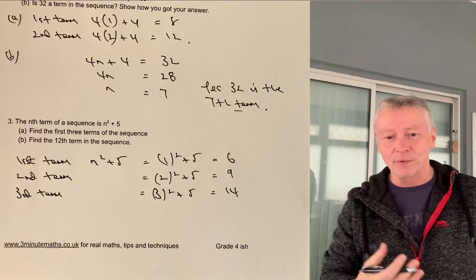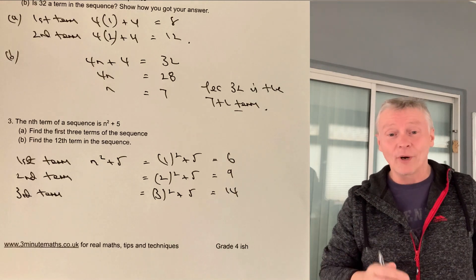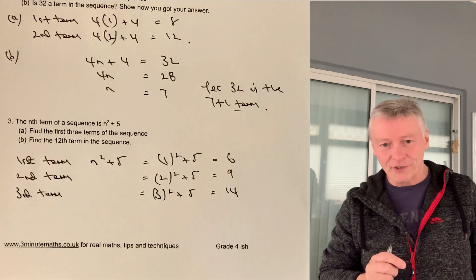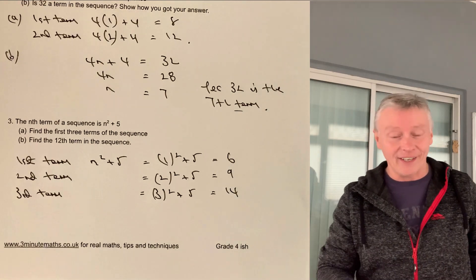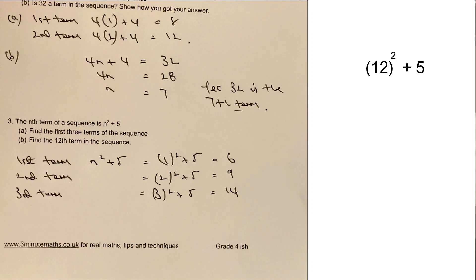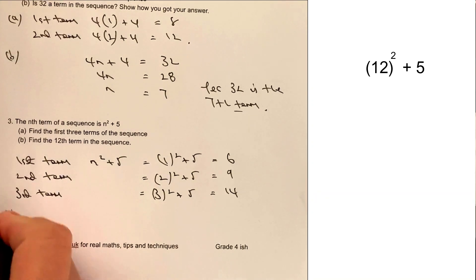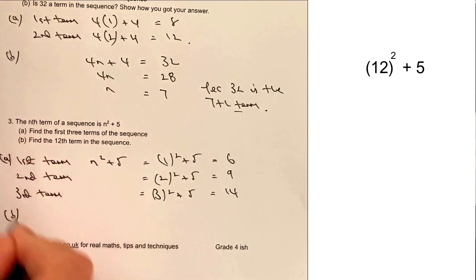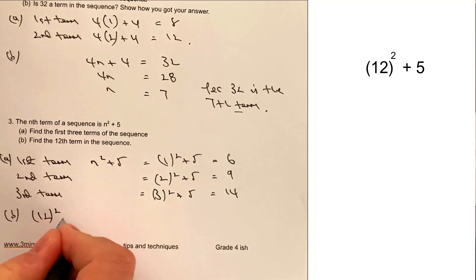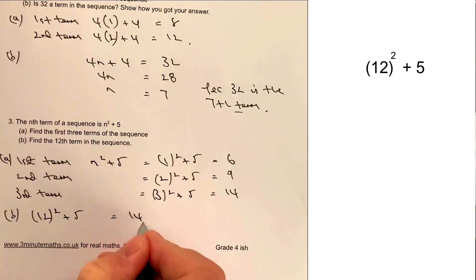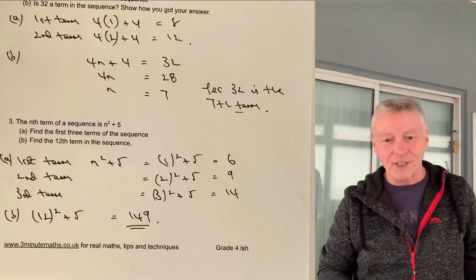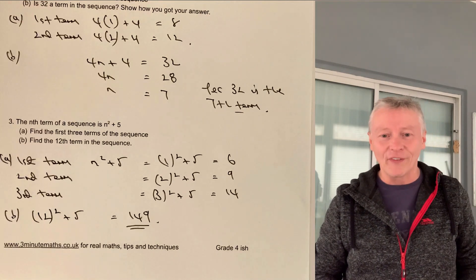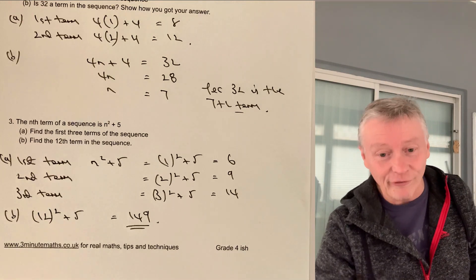So hopefully that's okay for you, but we can use exactly the same principle to answer part B, where it's asking for the 12th term of the sequence. All we're going to do is put the 12 in place of the letter n. So the 12th place is going to be 12 squared plus 5, which is going to equal 149. That would be the answer to that particular question.